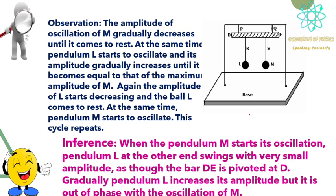Inference: When the pendulum M starts its oscillation, pendulum L at the other end swings with very small amplitude as though the bar D is pivoted at D. Gradually, pendulum L increases its amplitude but it is out of phase with the oscillation of M.